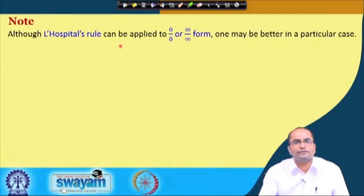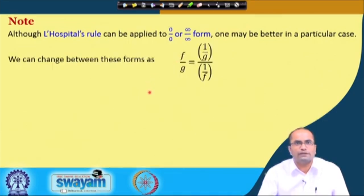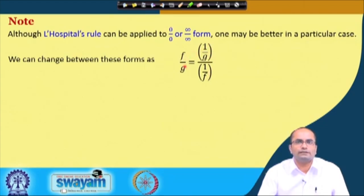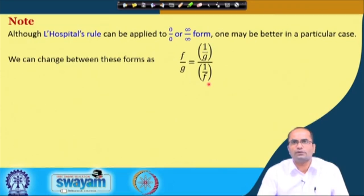Although L'Hôpital's rule applies to both 0/0 and infinity/infinity forms, one form may be more convenient in a particular case. We can switch between them: a 0/0 form can be rewritten as (1/g)/(1/f), yielding infinity/infinity, and vice versa, depending on which gives simpler derivatives.